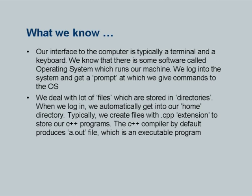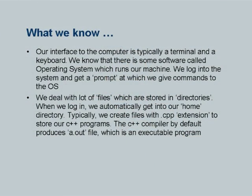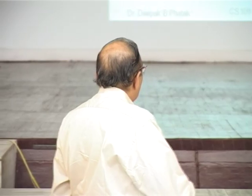We are also aware that we deal with a lot of files which are stored in directories. The program lines which we write in a program file — say prog.cpp — are nothing but data for a computer. The machine has no mechanism of knowing what is a program file versus a data file; for it, it's just a file. Such files are stored on the disk in different directories. When we log in, we automatically get into a home directory. We create files with specific extensions such as .cpp for C++ program files. The compiler by default generates an executable file called a.out, and we say ./a.out to execute our program, though we are still not very clear why we have to say ./a.out rather than just a.out.